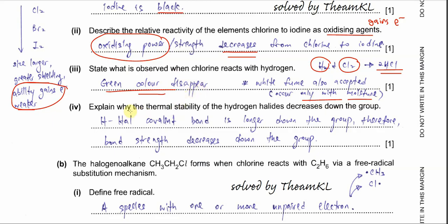For Part 4: Explain why the thermal stability of hydrogen halides decreases down the group. Thermal stability means how stable the compound is when we heat it. Thermal stability decreasing means it is easy to decompose — easy to break.